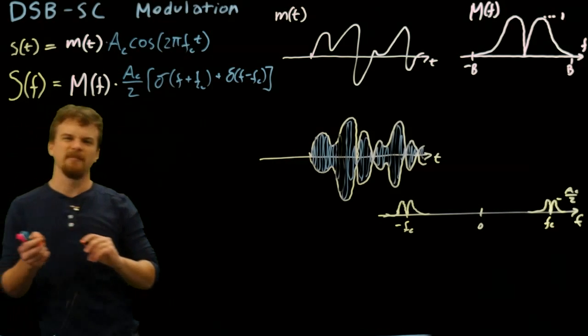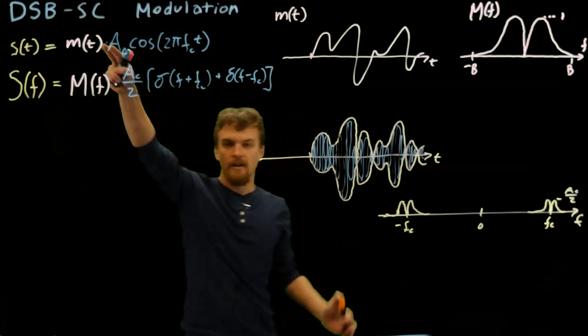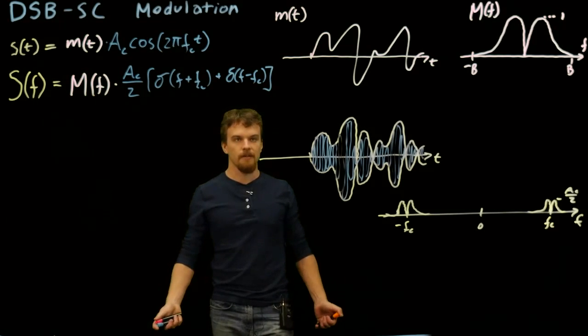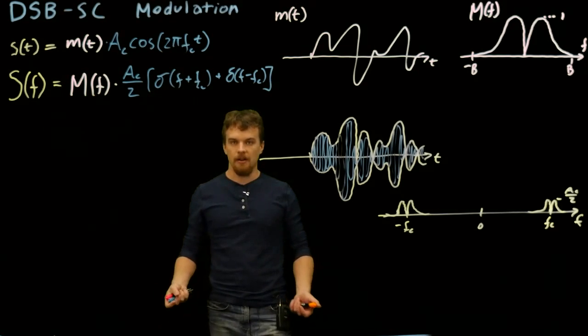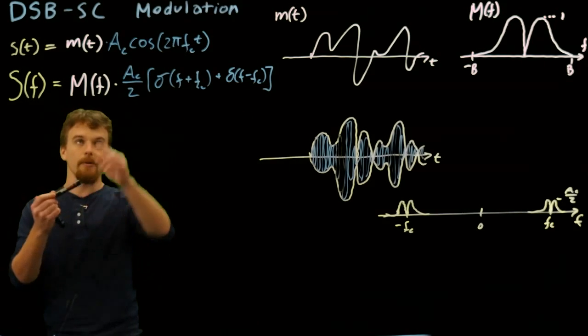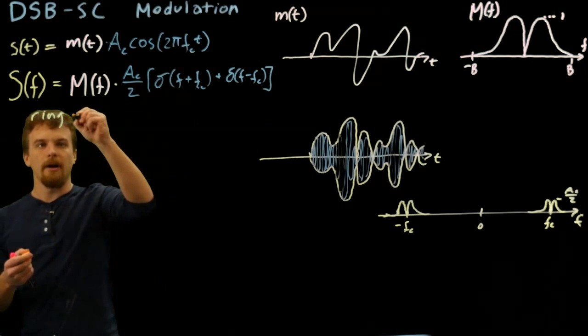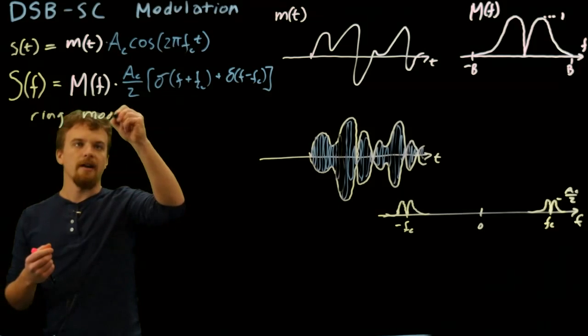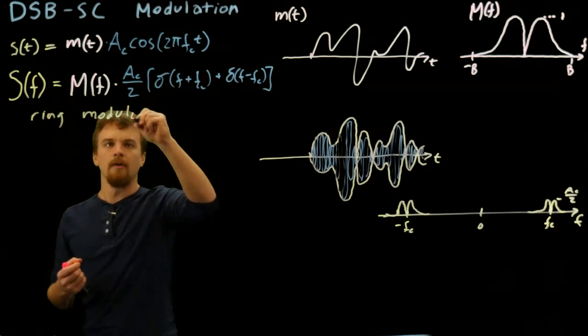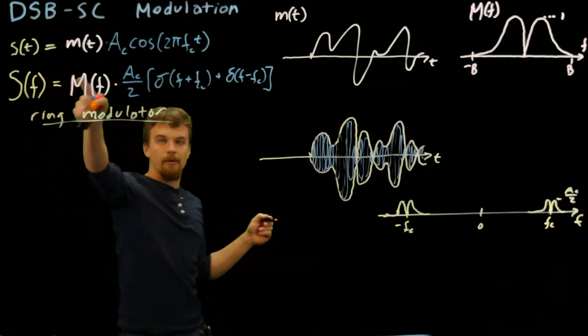Here's the problem we start running into practically: this multiplication is not exactly simple to do. We're dealing with analog systems. There's no real convenient analog circuits that just multiply voltages together. So this is a little bit difficult. We can accomplish this with something called a ring modulator. You can look up a schematic of it on Google pretty easily.